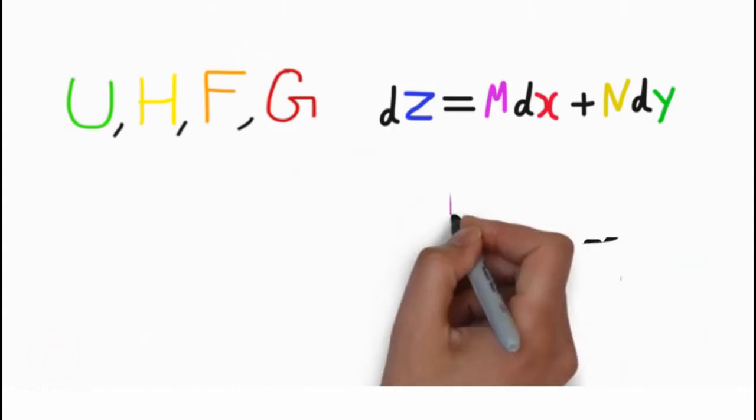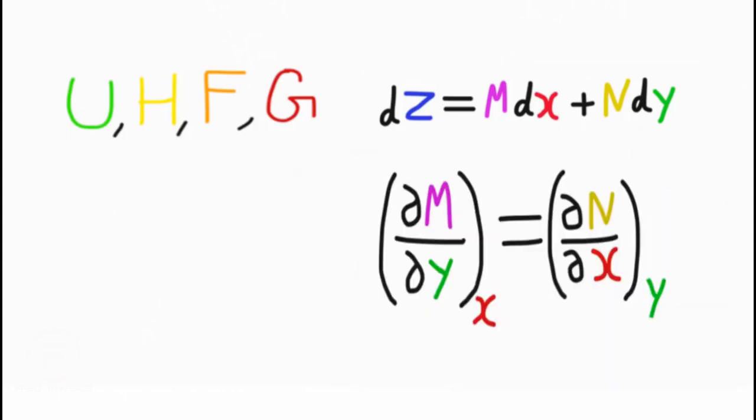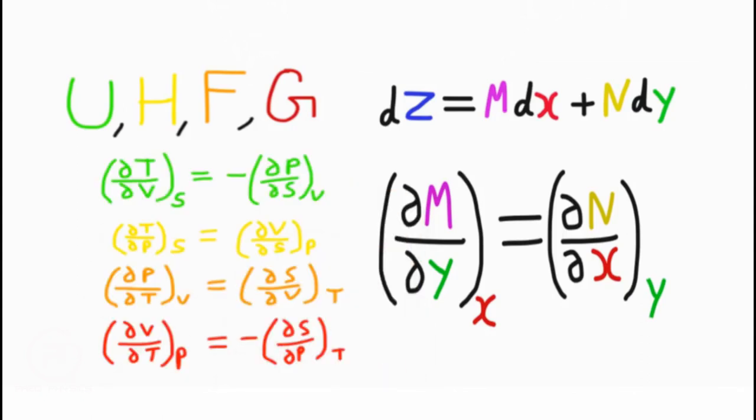These equations apply to the four thermodynamic properties and are exact differentials of the type dz equals m dx plus n dy, which can be represented as partial derivative of m with respect to y at constant x equals partial derivative of n with respect to x at constant y. Using this method on the four equations, we get the Maxwell equations.